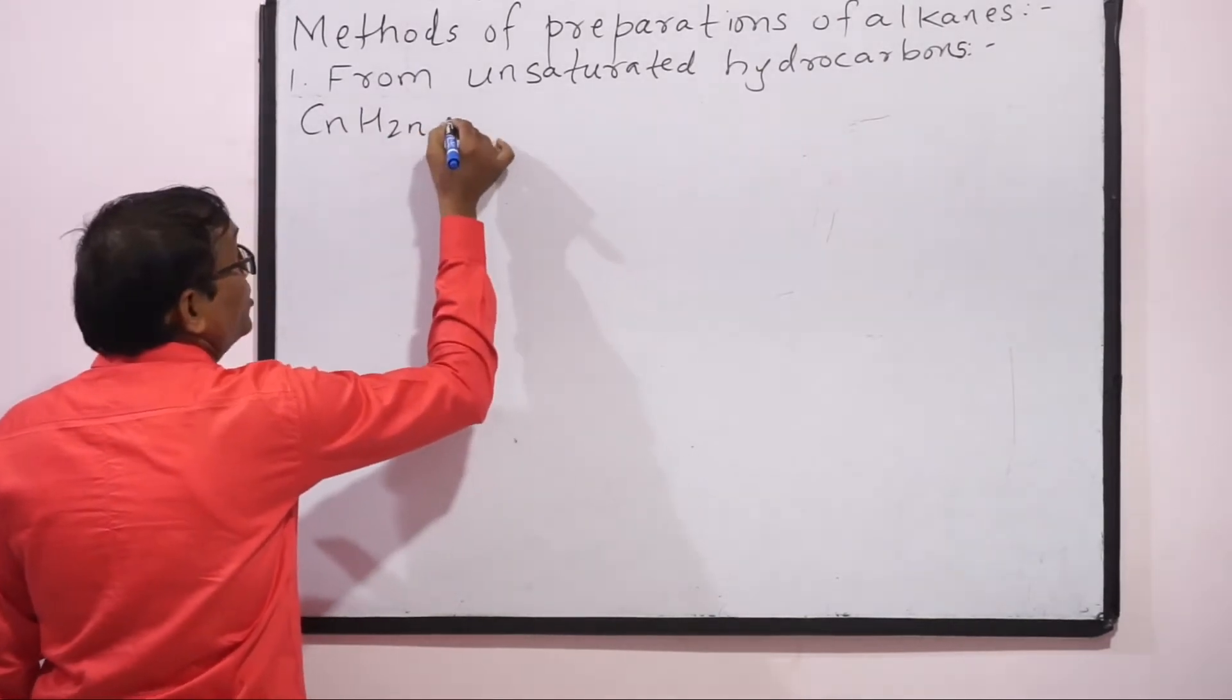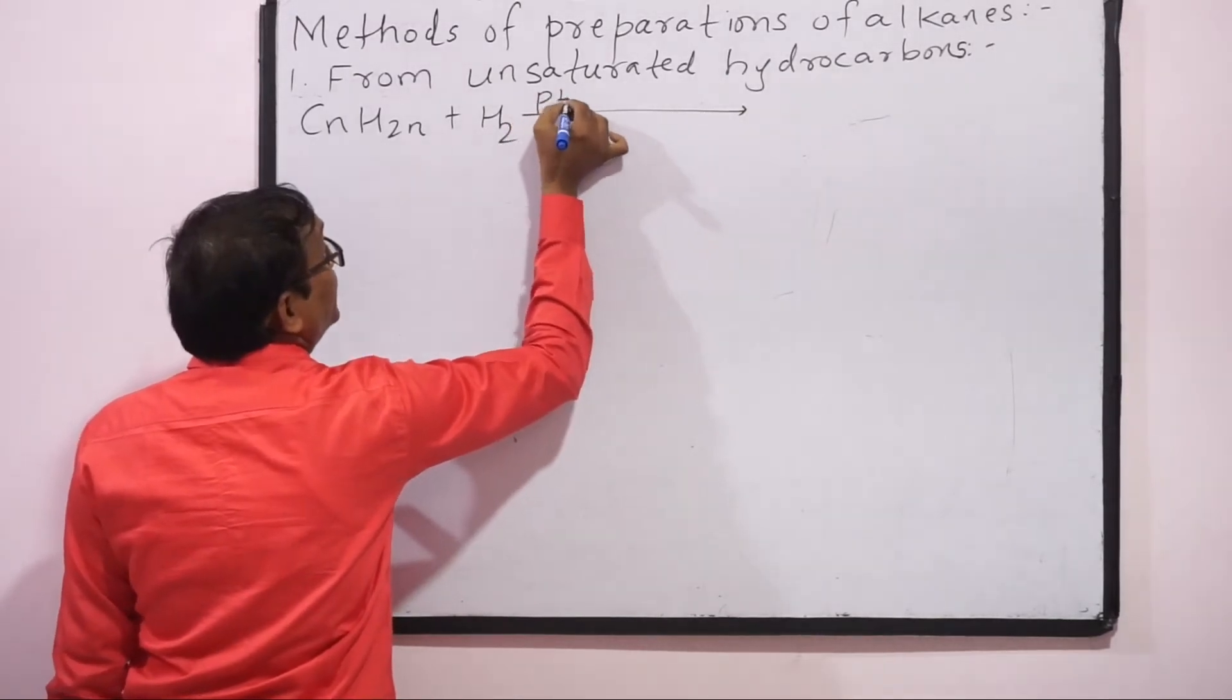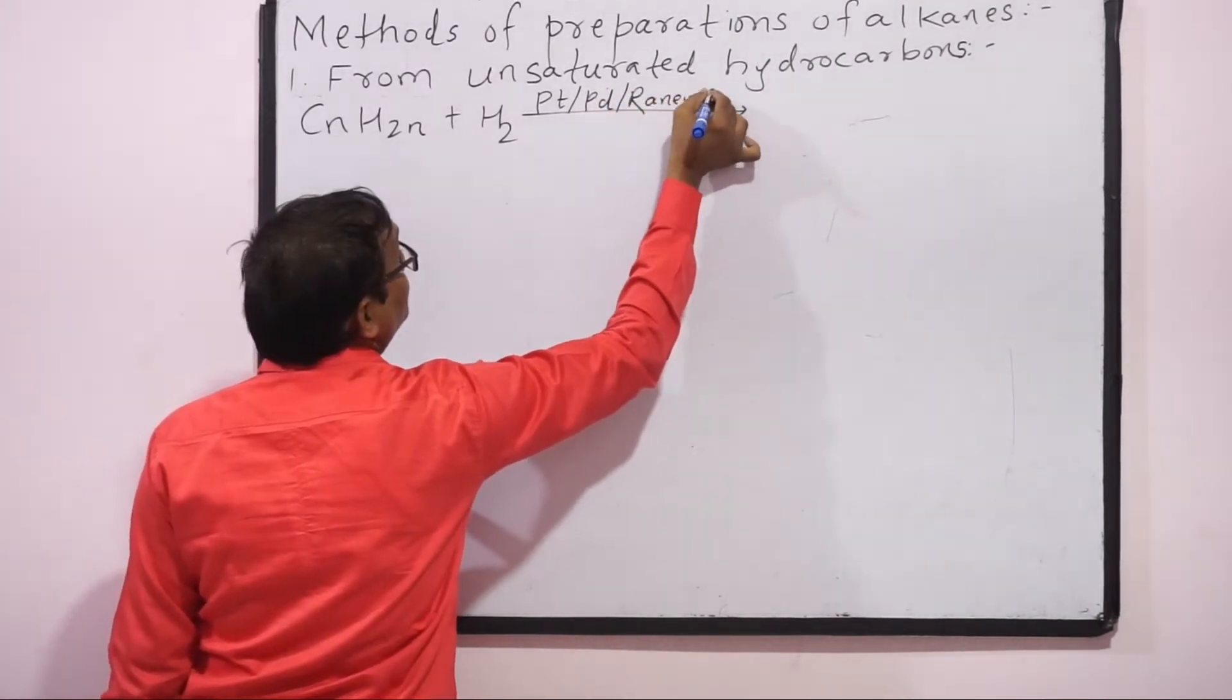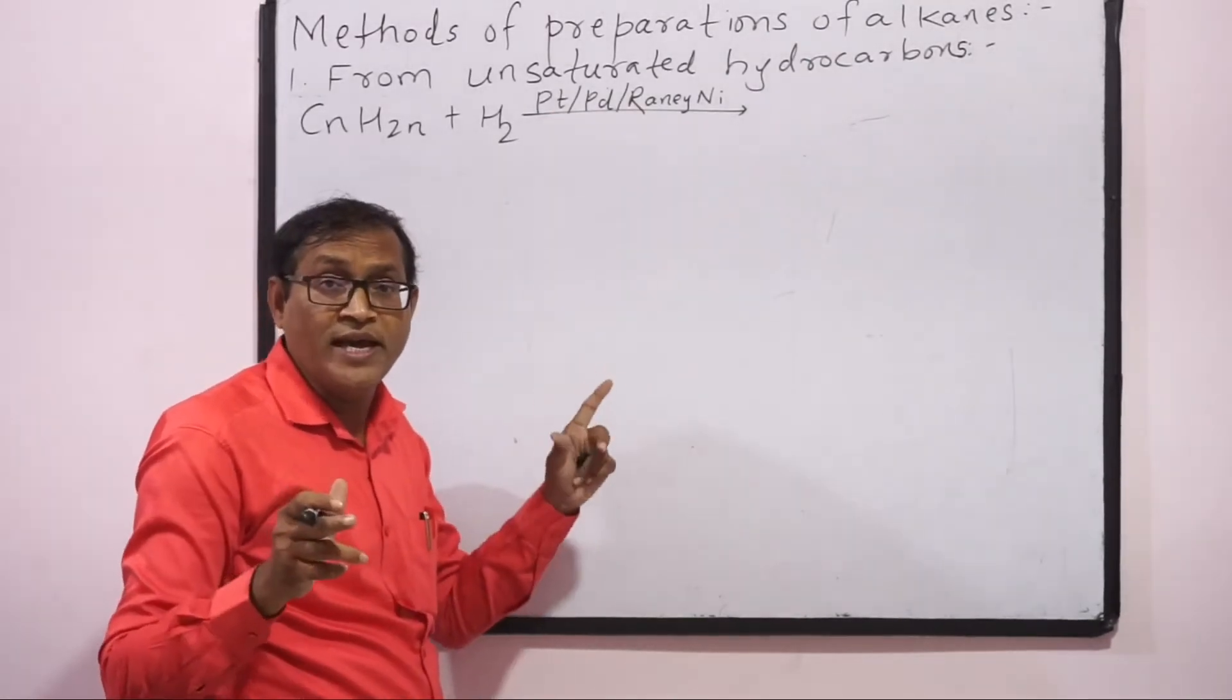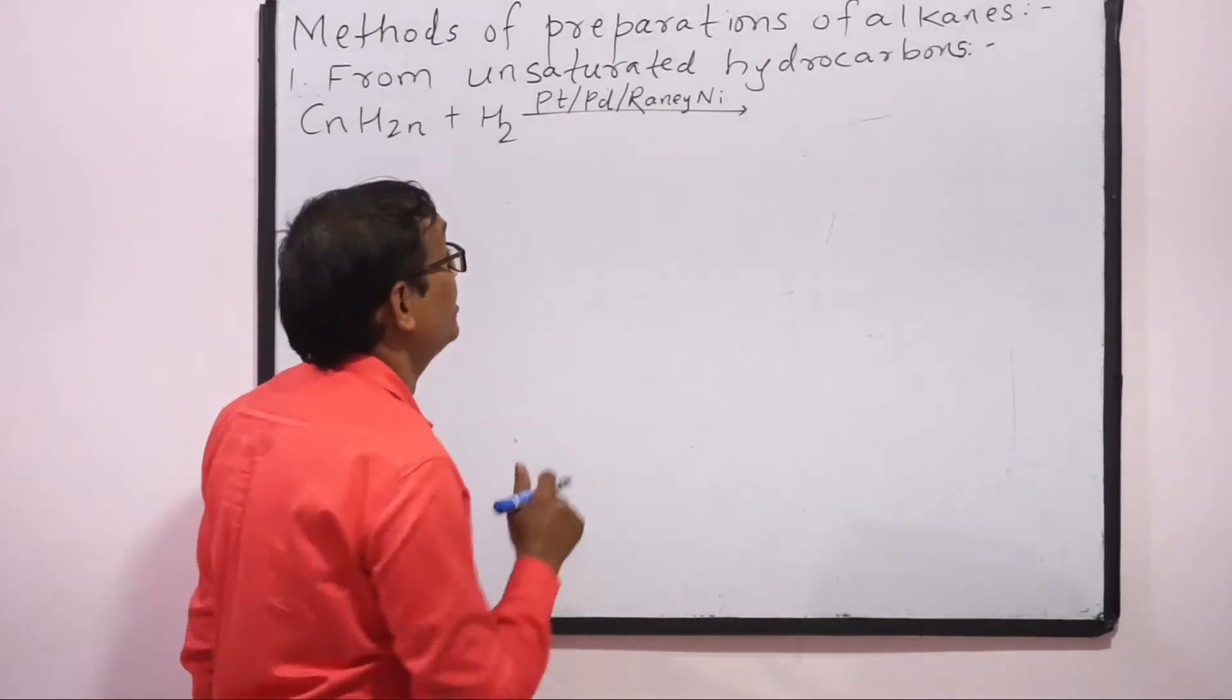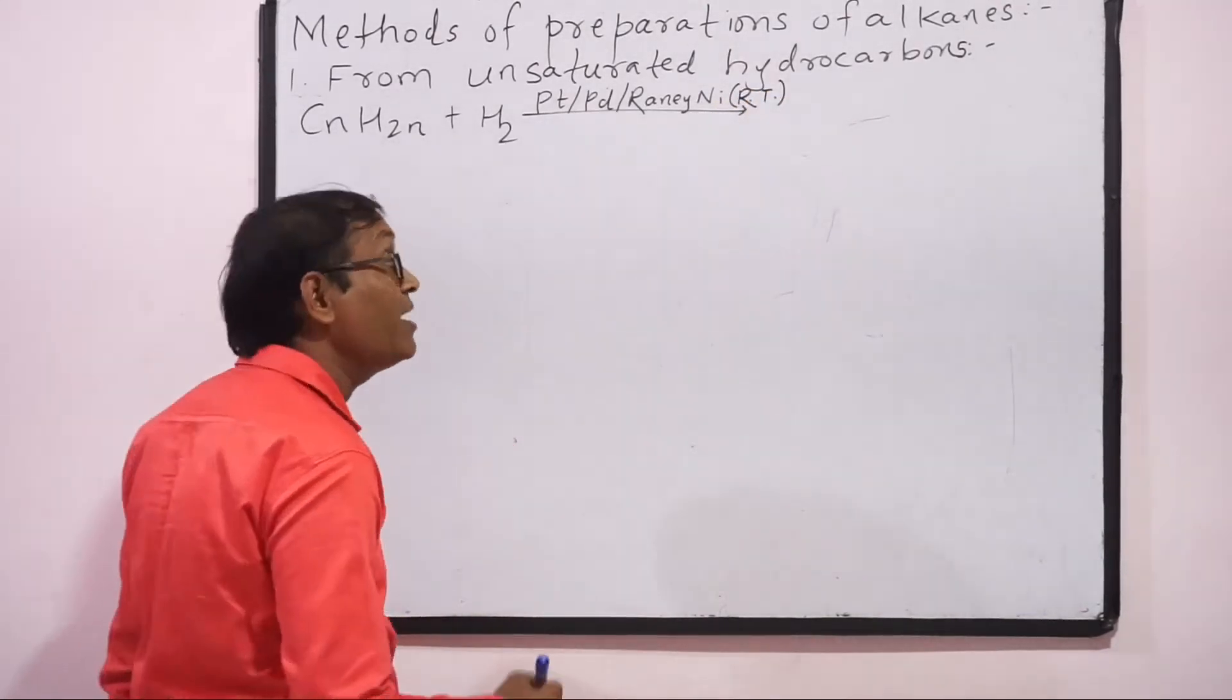Inhe hum treat karenge hydrogen gas ke saath. Catalyst use karenge platinum or palladium or raney nickel. Inhko hum catalyst ke form me use karenge. Catalyst is a substance which increases rate of reaction which speeds up the reaction. Ab yahaan inhko agar hum as a catalyst use karenge to room temperature reaction carry out karna padega.